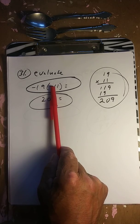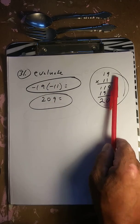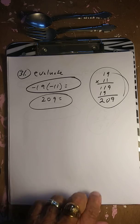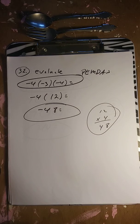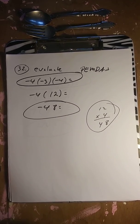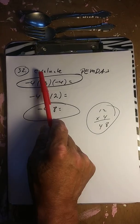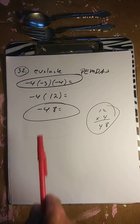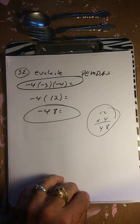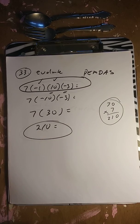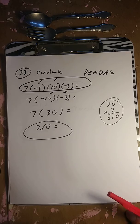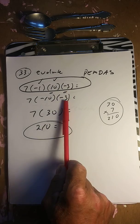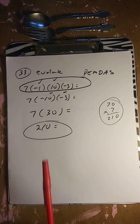Evaluate: negative times a negative is a positive, then that times a positive gives a negative — result is negative 209. Next: negative times a negative is positive 12, and negative 4 times 12 is negative 48. Next: negative 1 times negative 10 is positive 10, bring it down — negative 10 times negative is positive 30, and that times 7 is 210.